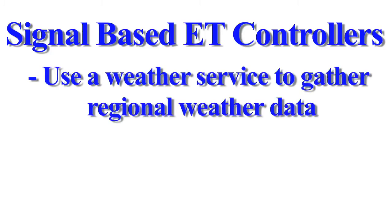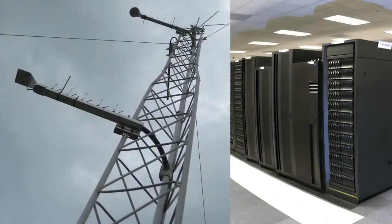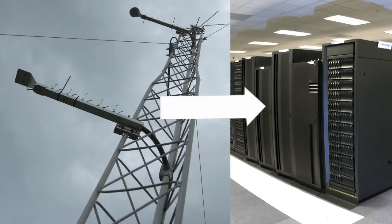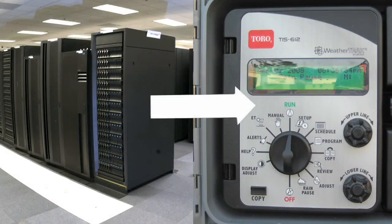Signal-based ET controllers rely on a weather service to send ET values to the controller using different types of communication technology. The weather service calculates ET by gathering regional weather conditions from weather stations in your area. Once the ET values are calculated, they are sent to your controller via pager or cell phone technology.